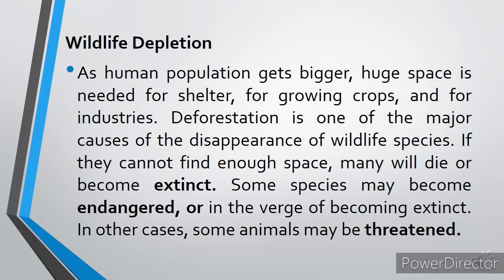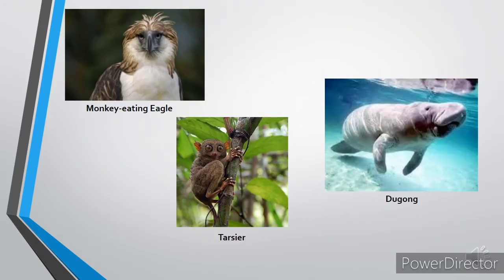Wildlife Depletion: As human population gets bigger, huge space is needed for shelter, growing crops, and industries. Deforestation is one of the major causes of the disappearance of wildlife species. If they cannot find enough space, many will die or become extinct. Some species may become endangered or are on the verge of becoming extinct. In other cases, some animals may be threatened. These are some of the threatened animals in the Philippines: the monkey-eating eagle, tarsier, and dugong.